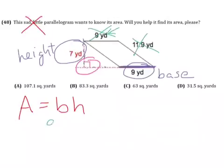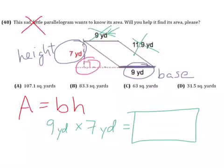So our base, nine yards, times our height, seven yards, will give us the area of our parallelogram. And remember, since it's area, our answer will be square yards or yards squared.